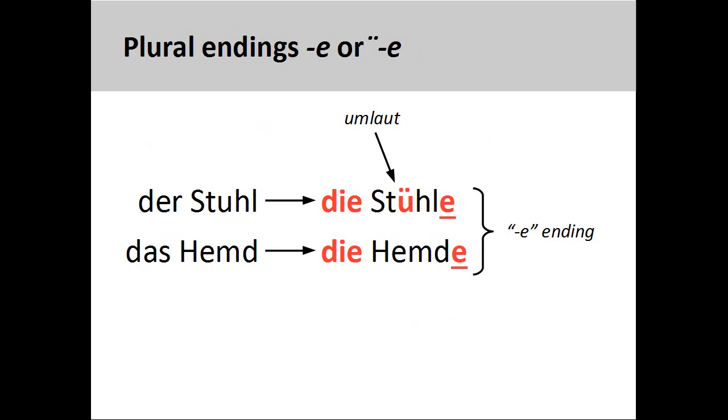The second group consists of nouns that add -e for a plural ending. This group contains a large number of German masculine and neuter nouns having only one syllable. The noun Hemd, shirt, is a good example, Hemde. As you can see with the noun Stuhl, chair, a few of these nouns also add an umlaut in the plural, Stühle.